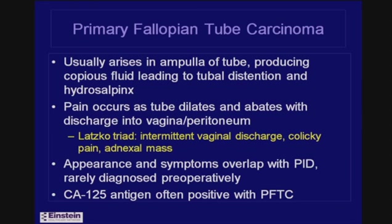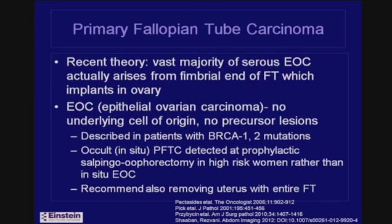Primary fallopian tube carcinoma is rare. Tumors usually arise in the ampullary portion of the tube; copious fluid is released, leading to distension and a hydrosalpinx. Patients get pain when the tube dilates, but then fluid is discharged into the peritoneum or retrograde into the uterus and vagina and symptoms abate — known as Latzko's triad: intermittent vaginal discharge, colicky pain, and an adnexal mass. The appearance and symptoms overlap PID, which is far more common, so this situation is rarely diagnosed preoperatively.